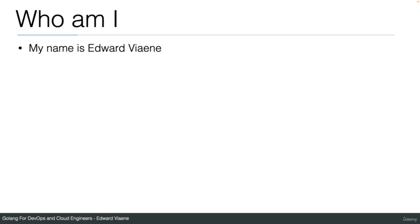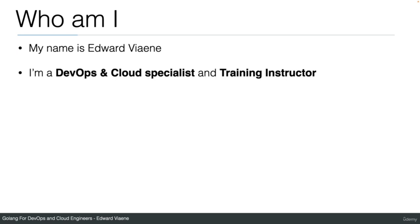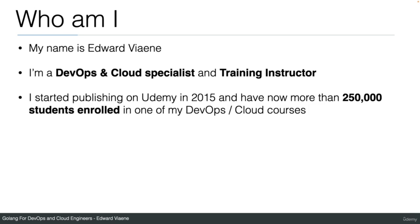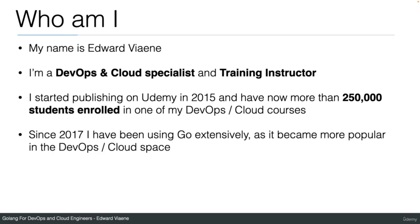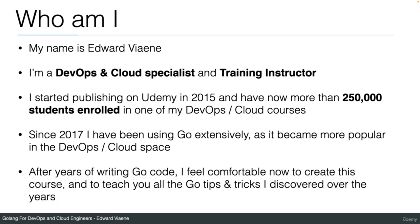Who am I? My name is Edward Vianne. I'm a DevOps and Cloud specialist and training instructor. I started publishing on Udemy in 2015 and now have more than 250,000 students enrolled in one of my DevOps and Cloud courses. Since 2017, I have been using Go extensively as it became more popular in the DevOps and Cloud space. After years of writing Go code, I feel comfortable now to create this course and teach you all the Go tips and tricks I discovered over the years.